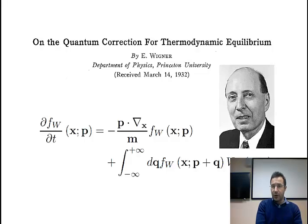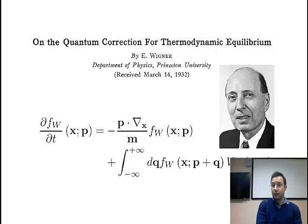He ended up with the equation you see here, and you can understand that this equation was not very popular at the beginning because of its mathematical tractability. As a matter of fact, this is a partial integro-differential equation, which is an extremely difficult mathematical problem to solve even from a numerical point of view. The unknown is a distribution function — or quasi-distribution function — defined over phase space, which is a six-dimensional space.